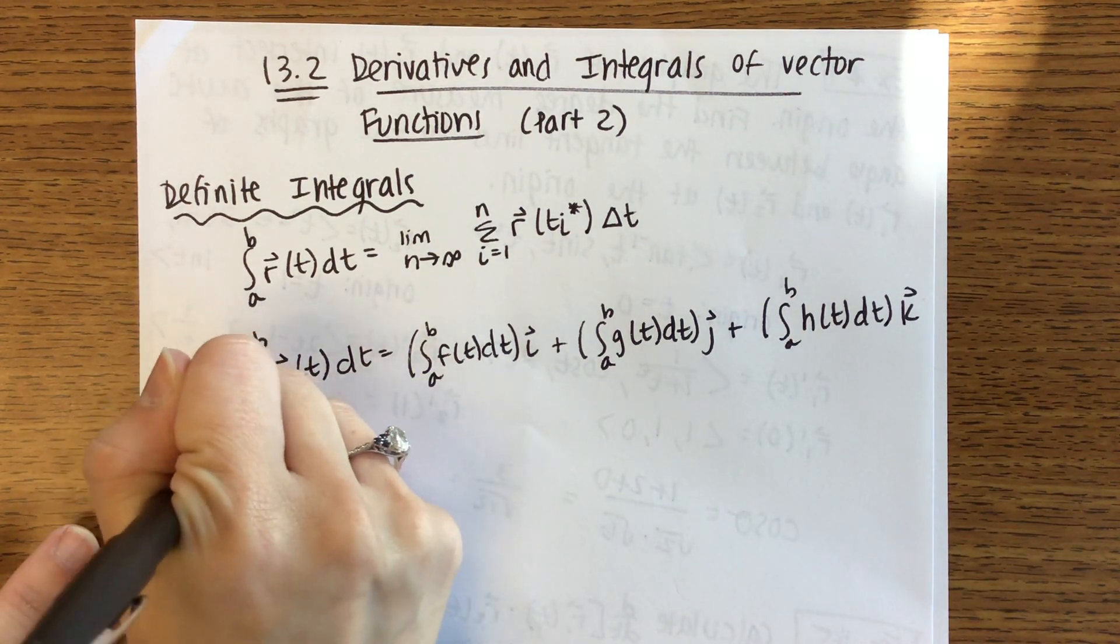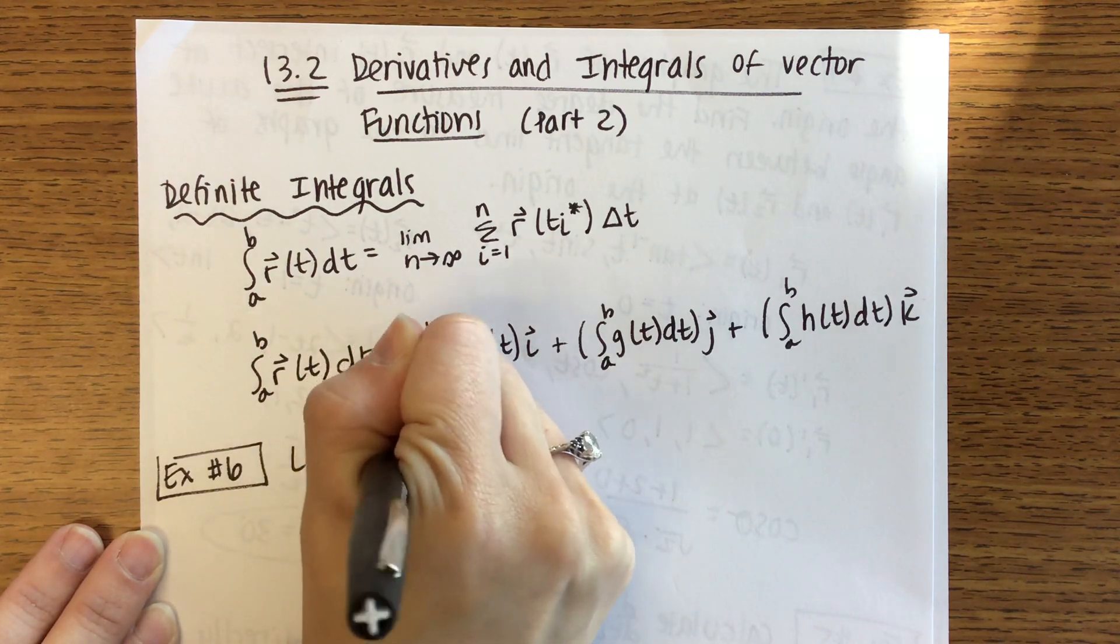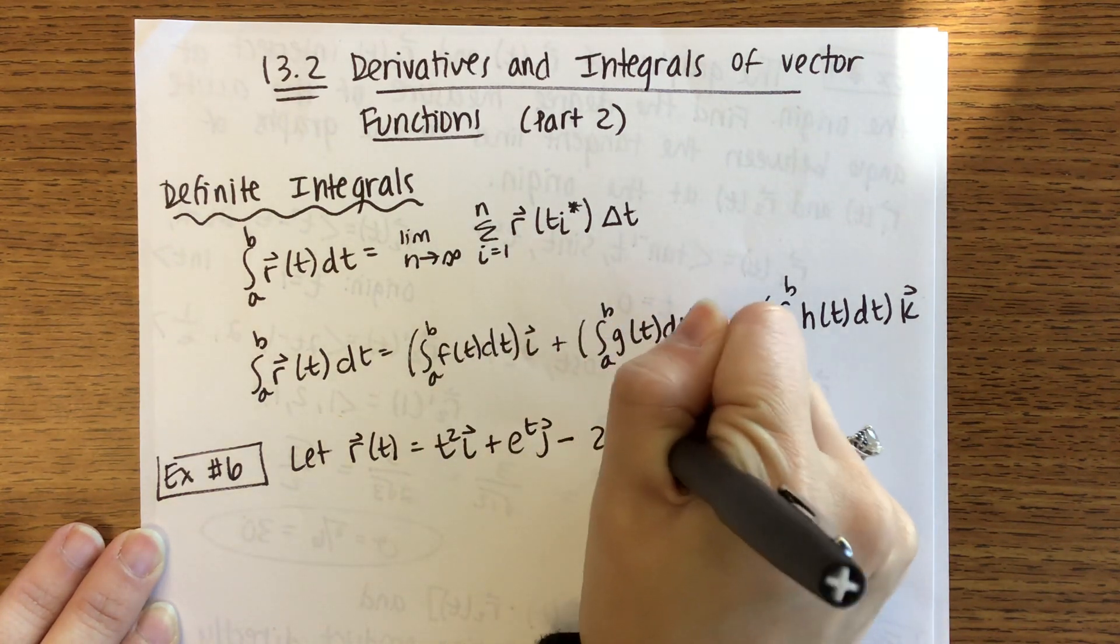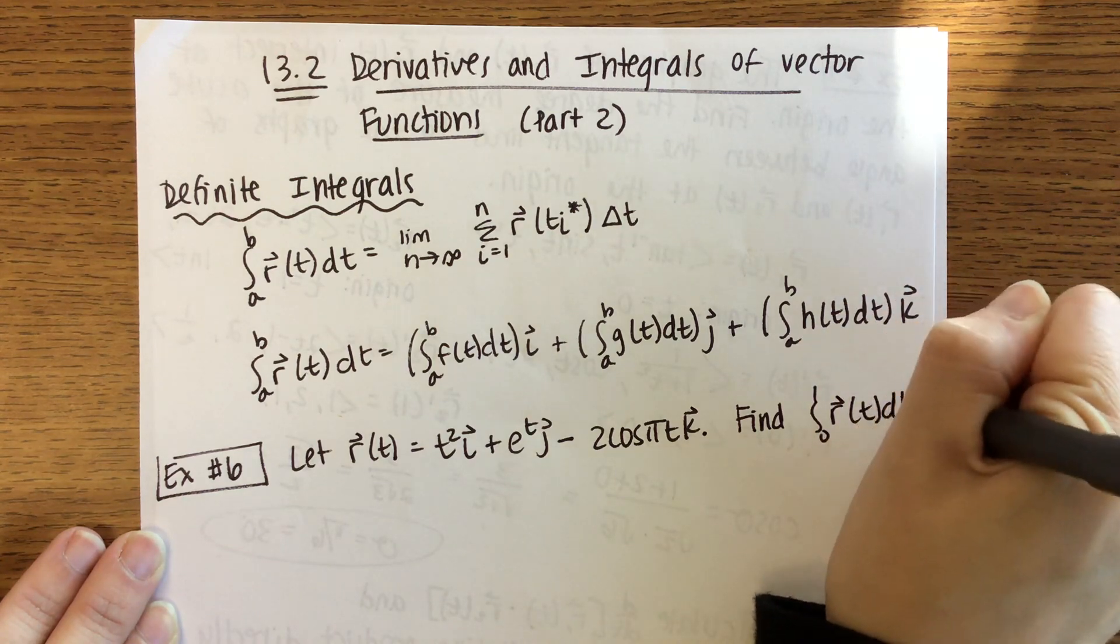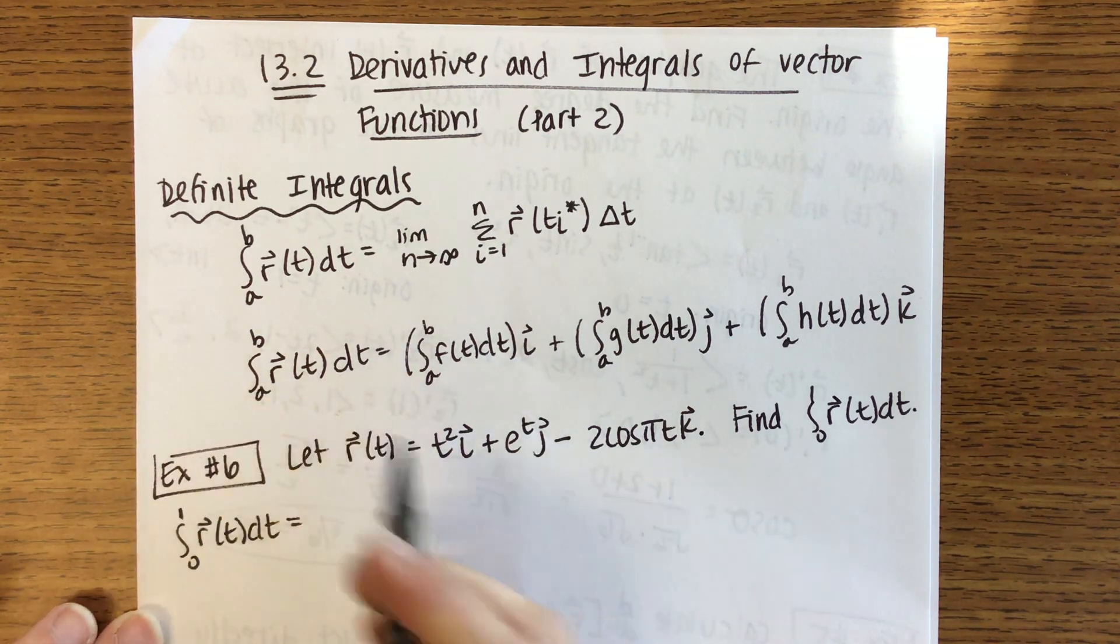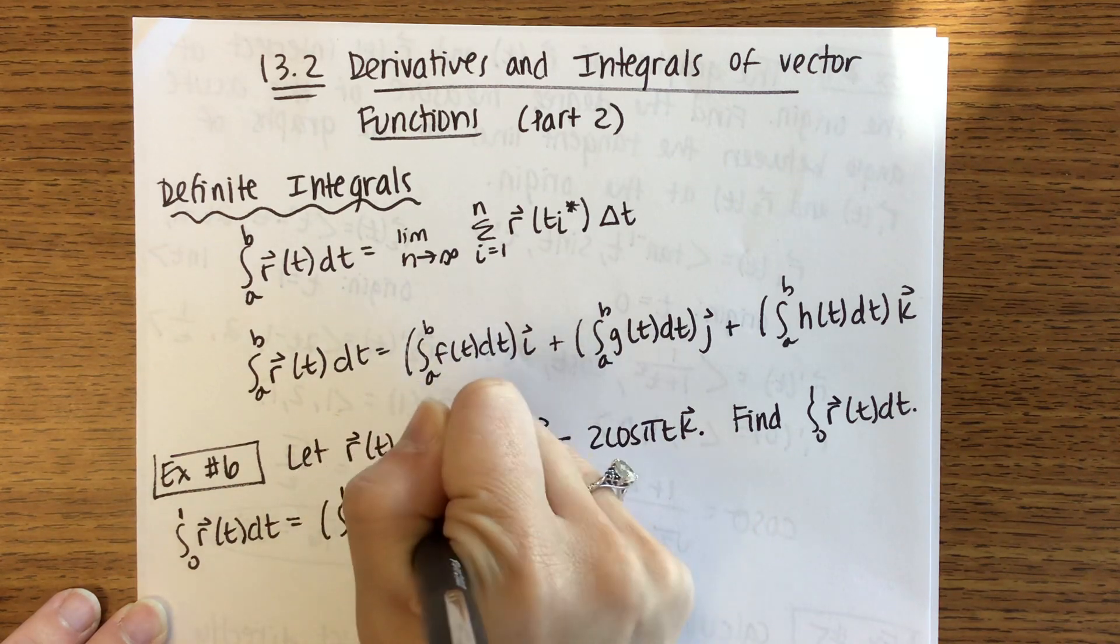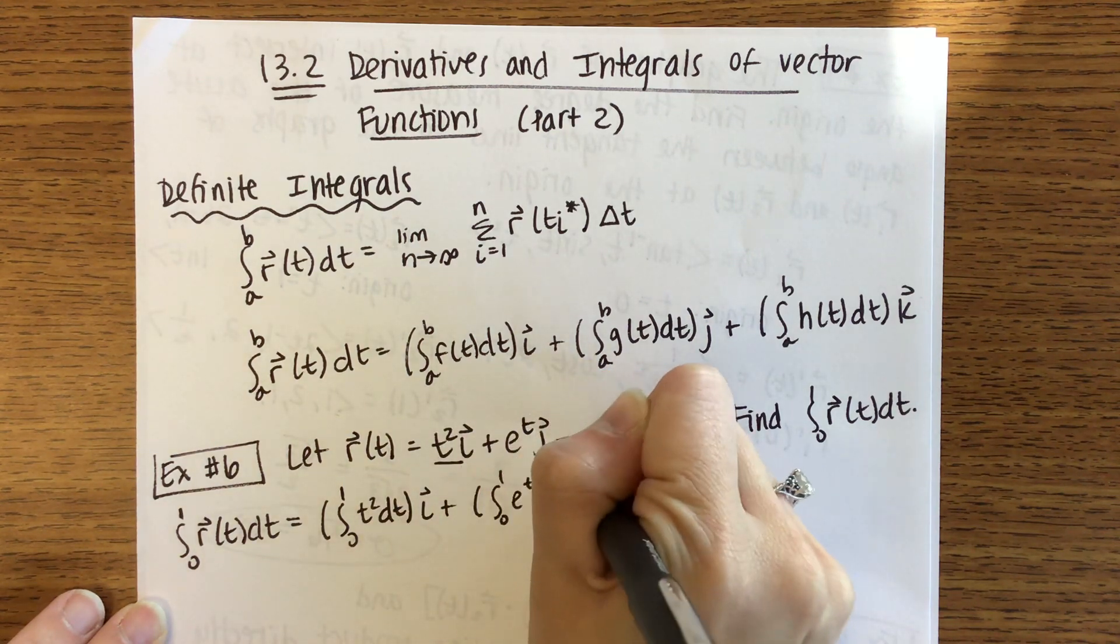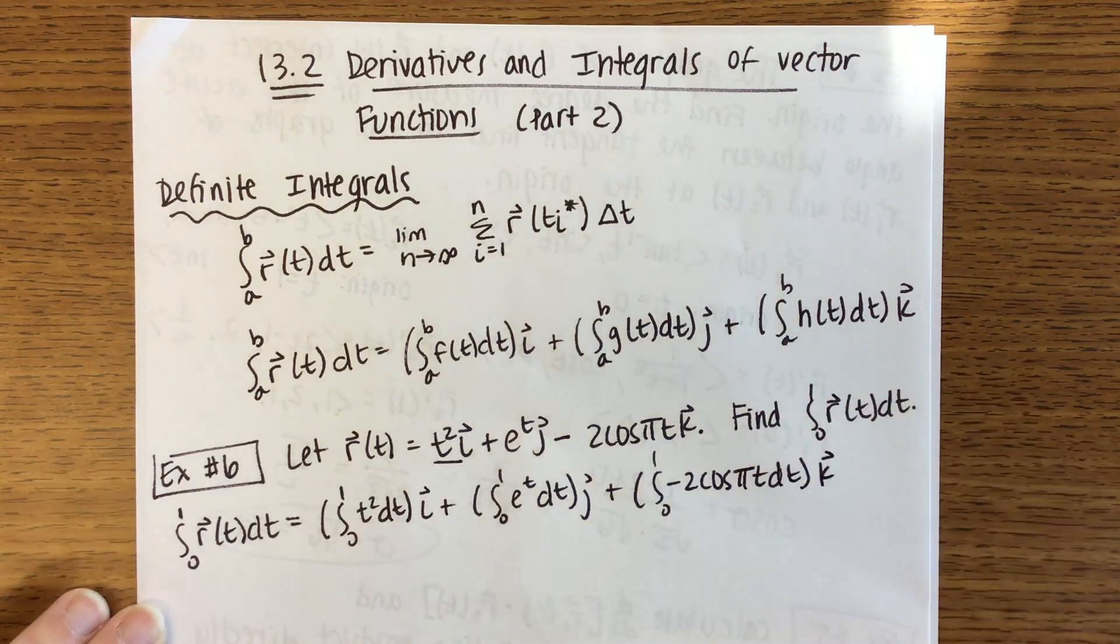So that's what you're going to do. We have three examples. First one is example 6, continuing from the notes. We are going to let r(t) be equal to t²i + e^t j - 2cos(πt)k. We are going to find the definite integral from 0 to 1 of r(t) dt. So if I want the definite integral from 0 to 1 of r(t) dt, using this idea above, I'm going to take the integral from 0 to 1 of the first component function, so the t² dt, and then multiply by i. Then I'll have the integral from 0 to 1 of e^t dt, times j, and then the integral from 0 to 1 of -2cos(πt) dt, all that times k.